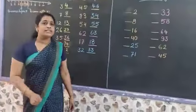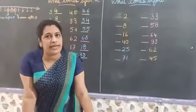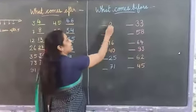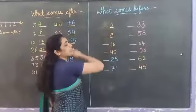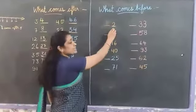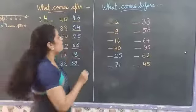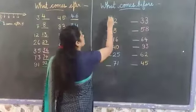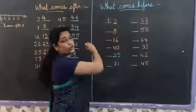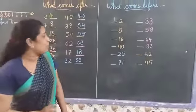Now let's learn more about before. Before means 'pehle.' Give a number — what comes before it? For example, which number is this? 2. What comes before 2? 1. 1 comes before 2.